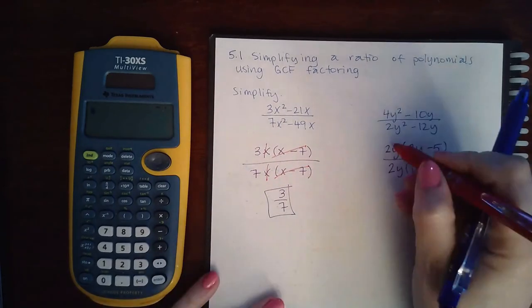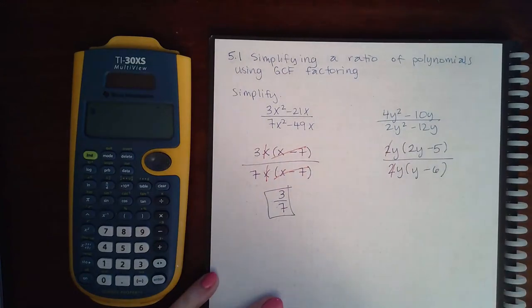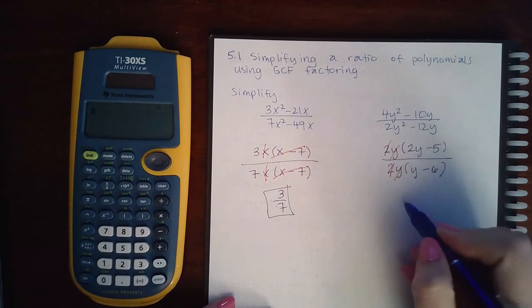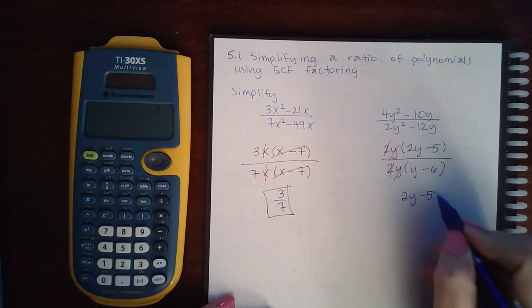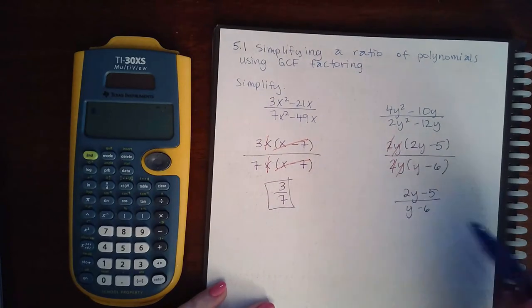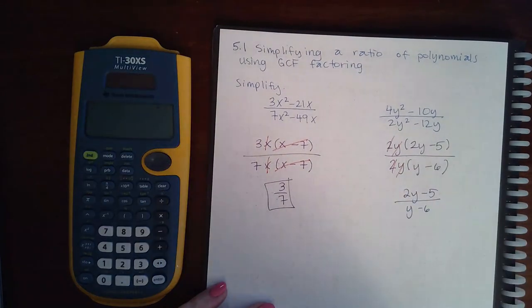Here, the 2s will reduce or cancel, and the ys will reduce or cancel, but I still have these factors left over. Since they're the only factors left over, I don't need to have the parentheses in the numerator or the parentheses in the denominator.